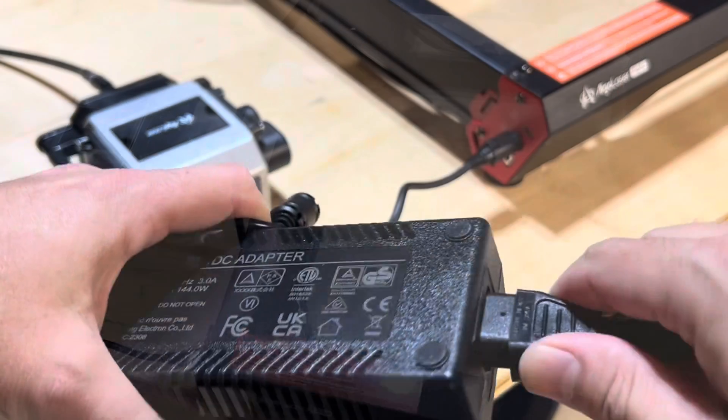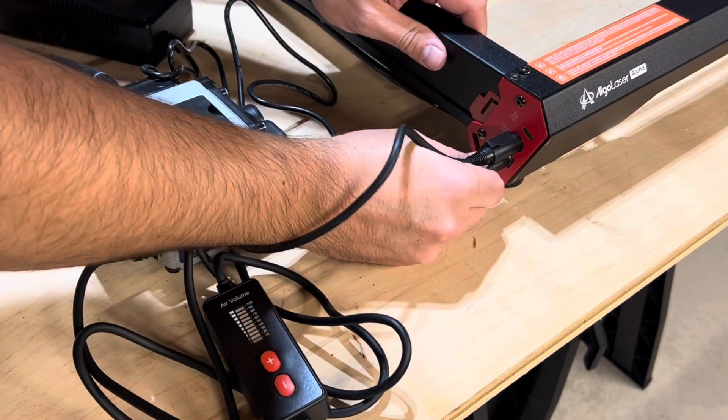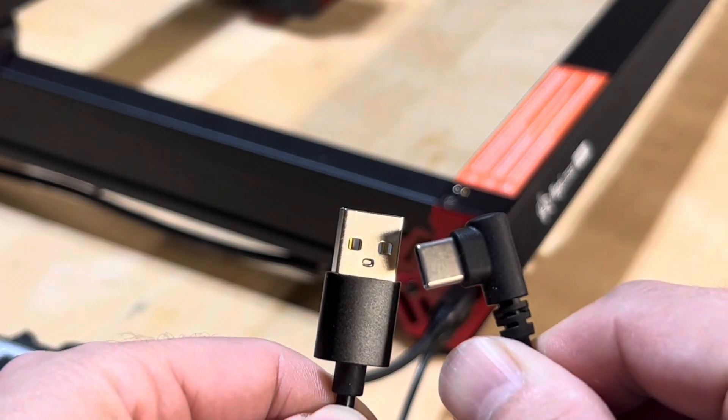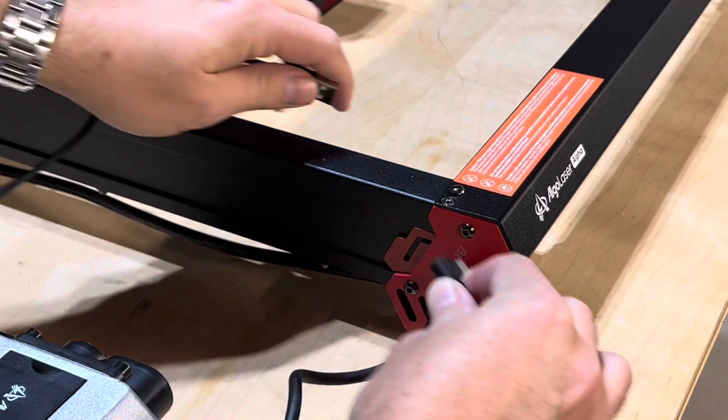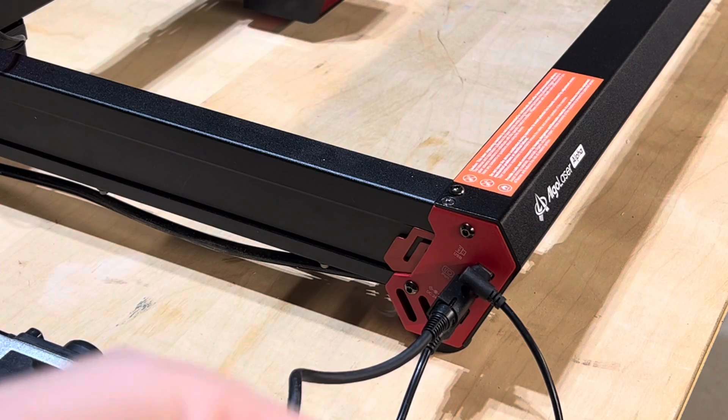Step 10 is connecting the power supply. Insert the power cord into the 24 volt 4 amp socket to power the machine. Insert the USB cable into the USB port and the other end gets connected to a computer to establish a connection between the computer and the machine.